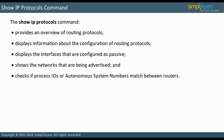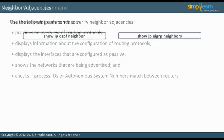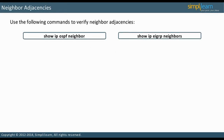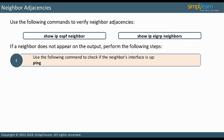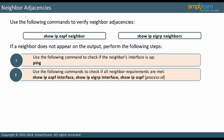Let us look into troubleshooting neighbor adjacencies. Both OSPF and EIGRP have commands to list neighbors. Note that the OSPF command uses the singular term neighbor, while the EIGRP command uses the plural of the word neighbor. If a neighbor does not appear in the output, use the PING command to check if the neighbor's interface is up. Also, examine if all neighbor requirements are met.